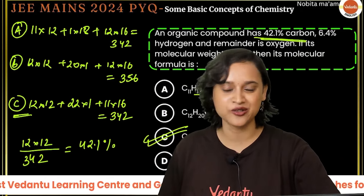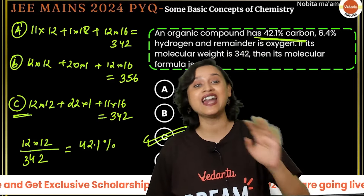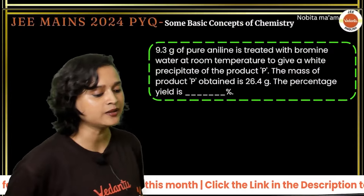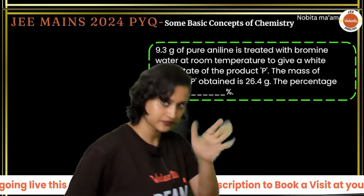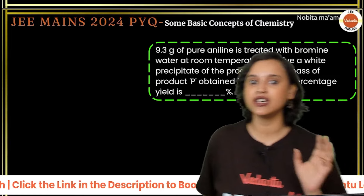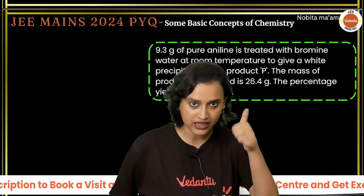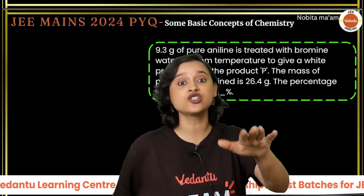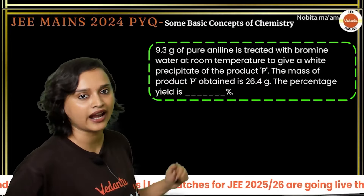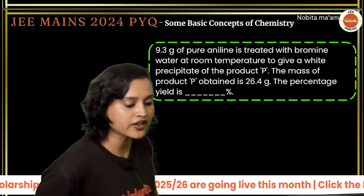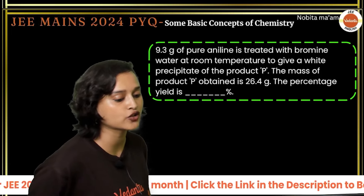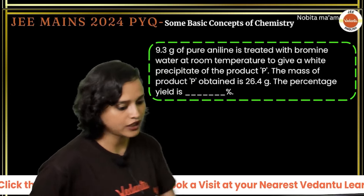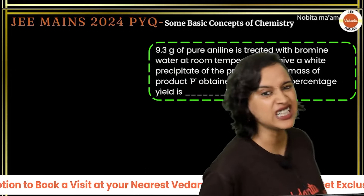You can see that similar types of questions keep appearing across different shifts — combustion of hydrocarbons, organic reactions involving stoichiometry. The next April attempt question: 9.3 grams of pure aniline is treated with bromine water at room temperature to give a white precipitate of product P. The mass of P obtained is 26.4 grams. What is the percentage yield?